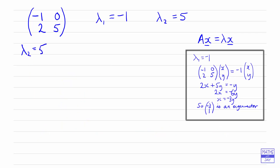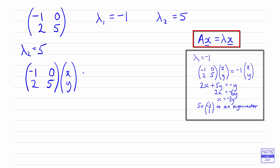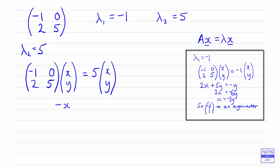For the other eigenvalue, lambda 2 equals 5, we write down our matrix — minus 1, 0, 2, 5 — multiplied by the vector (x, y), set equal to 5 times (x, y). Looking at the first row: minus x equals 5x, so 6x equals 0, meaning x equals 0. Looking at the second row: 2x plus 5y equals 5y, so 2x equals 0, again giving x equals 0. Both rows give the same result.